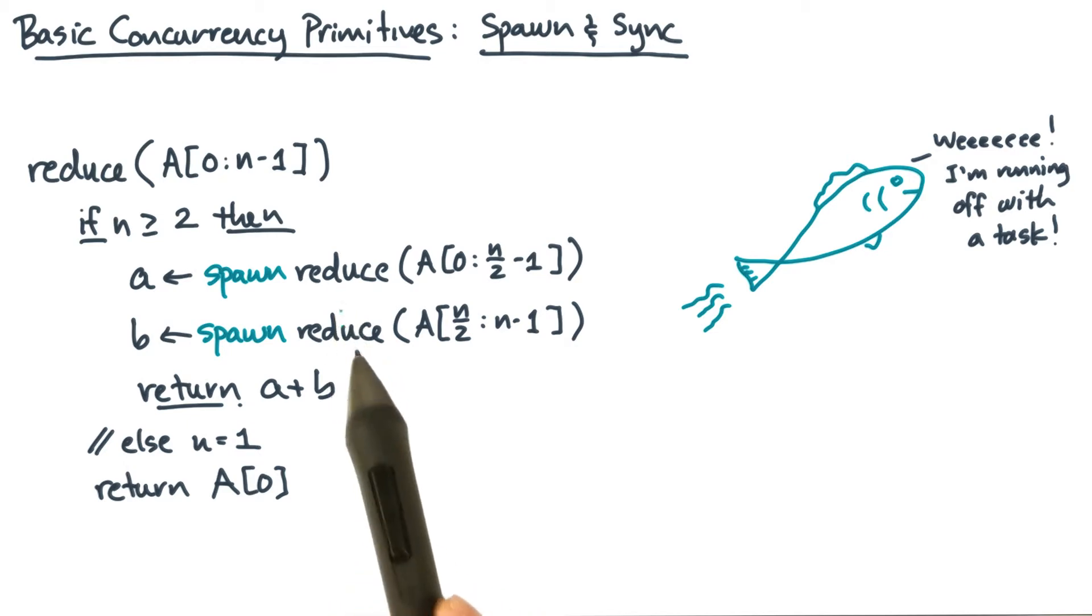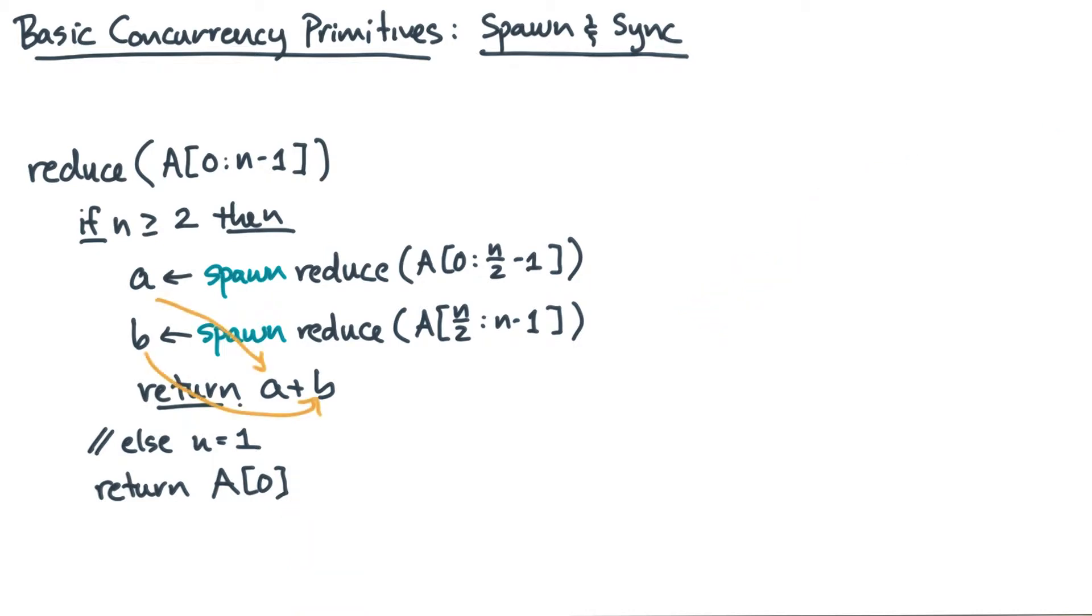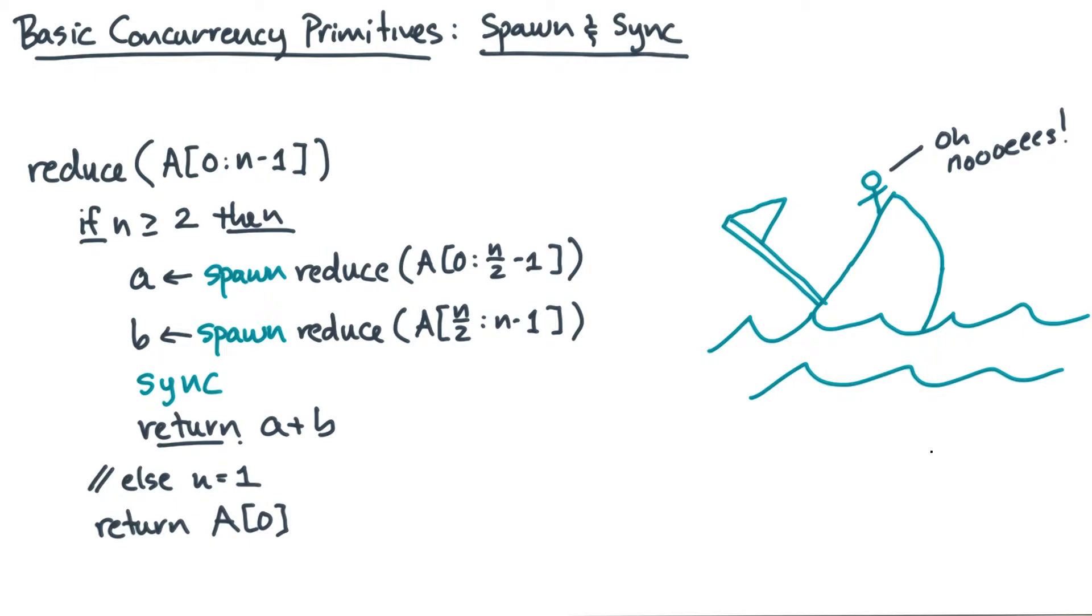Now, even though these two calls are independent units of work, notice that they produce intermediate results that then have to be combined. In other words, there's a dependence from A and B to the return statement. That means in addition to spawns, we also need a way to indicate these kinds of dependences. For that, I'll give you a second special keyword called sync.